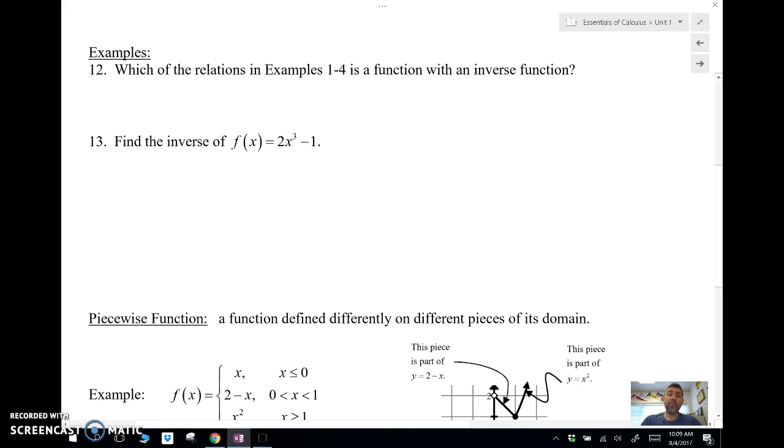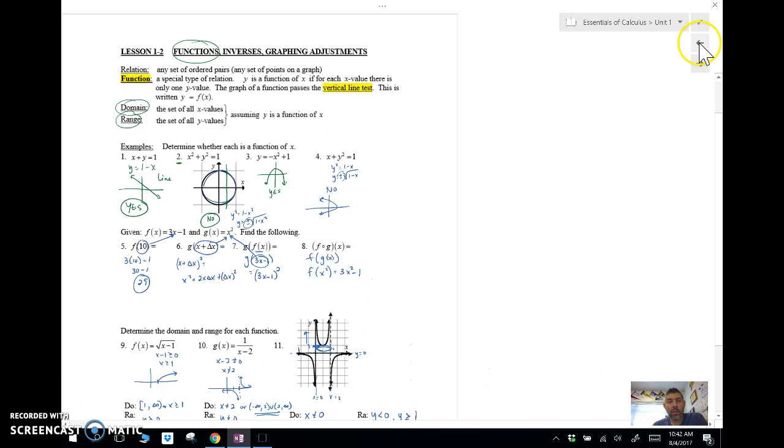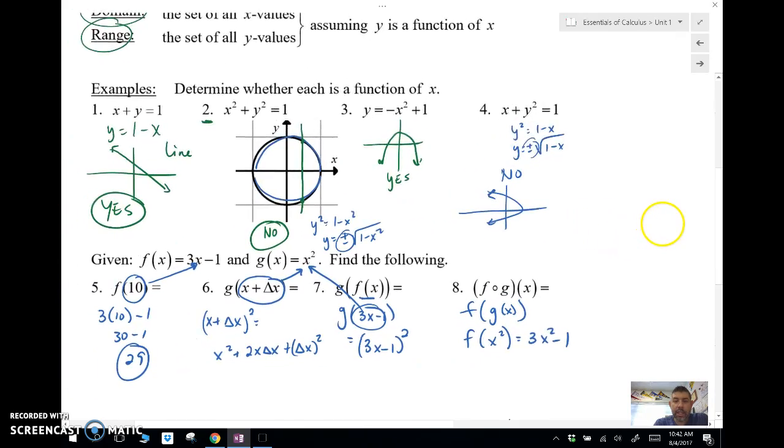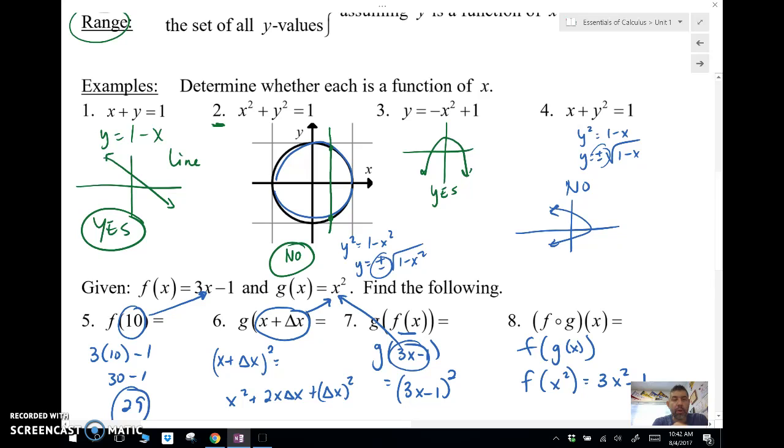Let's take a look at the examples from the previous video, numbers one through four, and determine which of these is a function with an inverse. Our first problem here was a line. A line does pass the horizontal line test. The horizontal line only passes through this line once each time. It doesn't pass more than once. So this is a function with an inverse that is also a function.